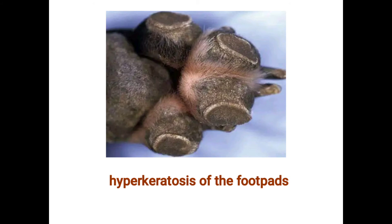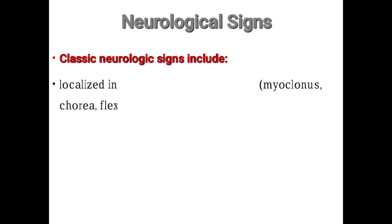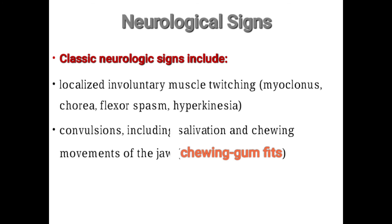An image shows hyperkeratosis of the foot pad. Neurological signs arise when the virus infects the brain or other nerves. Classic neurological signs include localized involuntary muscle twitching — myoclonus, chorea, flexor spasm, and hyperkinesia. Convulsions include salivation and chewing movements of the jaw, called 'chewing gum fits.' This is a critical and frequently examined sign of canine distemper, useful for differentiating it from other diseases.